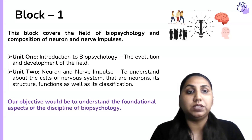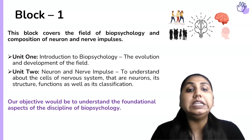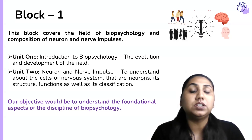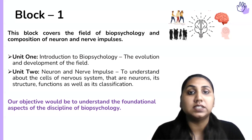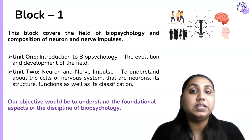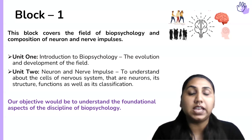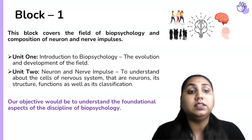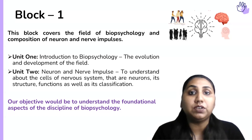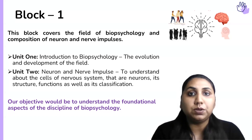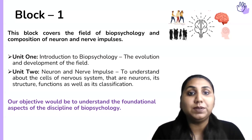Block one primarily covers the field of biopsychology along with the composition of neurons and nerve impulses. In unit one we will discuss the introduction to biopsychology — the evolution and development of the field, how it came into picture, who were the pioneers, and how it was shaped over time.